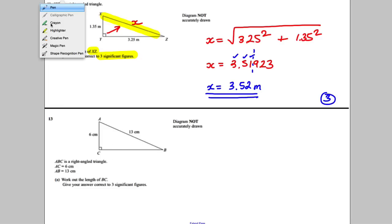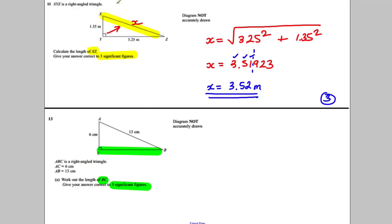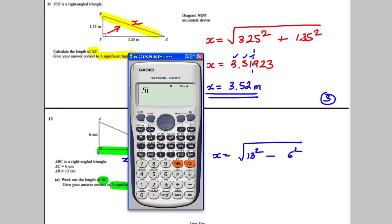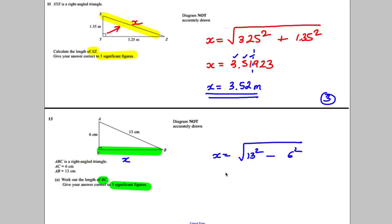Next one: you've got two sides in a right-angled triangle, asked to work out the length of BC to 3SF. BC is one of the shorter sides — not the longer one opposite the right angle. Call it X. X equals square root of 13 squared minus 6 squared. Calculator out: square root of 13 squared take away 6 squared equals, SD: 11.53256. Rounded to 3SF — that three keeps this the same — X equals 11.5 centimetres.